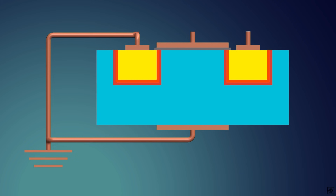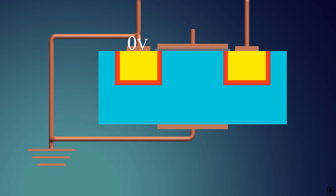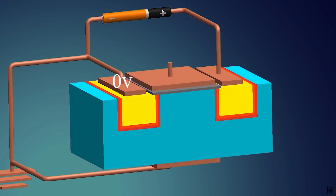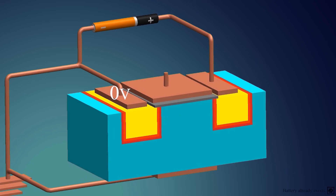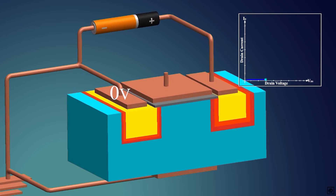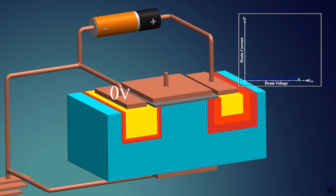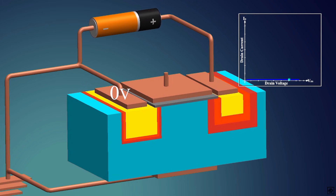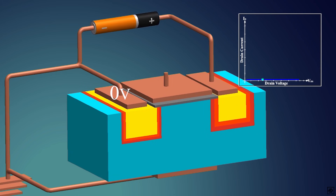The MOSFET we see has three terminals. Also, this stops any current flow from the substrate to the source as they are at the same potential. In the MOSFET, we want to flow conventional current from drain to source. So let's connect a battery between drain and source. This voltage is called VDS as it's between the drain and the source. The positive end of the battery increases the potential at the drain terminal, thus increasing the depletion region between the drain and substrate. Due to this, there will be no current flow from the drain to the source and the MOSFET is off. This is also called the cutoff region.